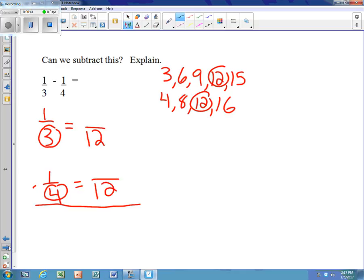And then we ask ourselves 3 times what is 12, and it's 4. And then we ask ourselves 4 times what is 12, and we know it's 4 times 3. And now instead of adding, we just subtract. So 4/12 minus 3/12 is 1/12. I apologize, the smartboard is writing strange, so there's the 1/12.